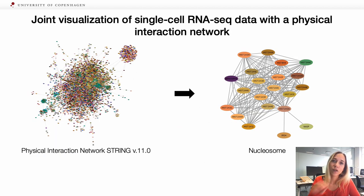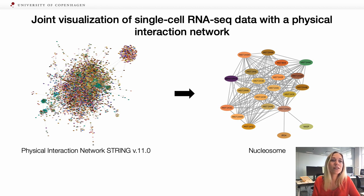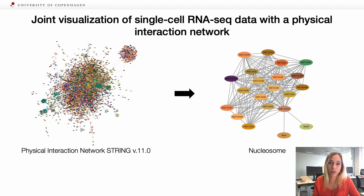And this is exactly what we did here. You can see a physical interaction network obtained from STRING version 11, visualized in Cytoscape with the colors obtained from single-cell RNA-seq data. It looks very colorful, but the amazing part is that if you really focus, you will see protein complexes — like the one I showed you before — which have similar colors, reflecting similar expression between most of their proteins.